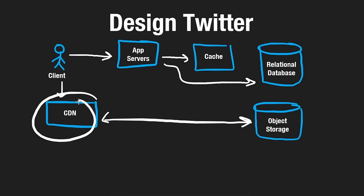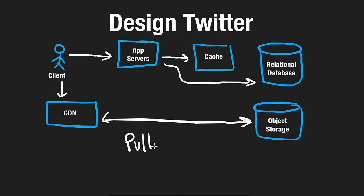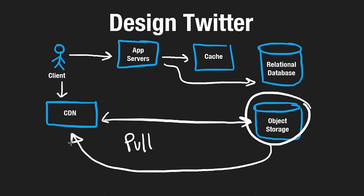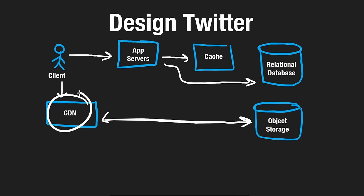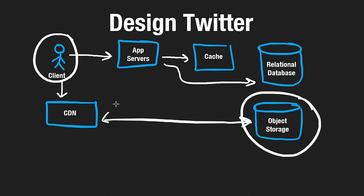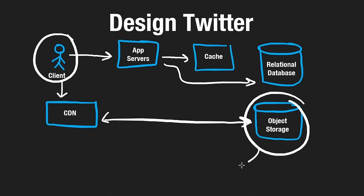Because these assets are static in nature, it may be better to distribute them over a CDN network. That way, the application server doesn't have to interact with object storage directly. The app server responds to the user with all the information they need, including the URL of the image or video. The client then makes a separate request that hits our CDN, which is tied to our object storage. We'd probably want to use a pull-based CDN — we don't want to push every image or video to the CDN immediately.